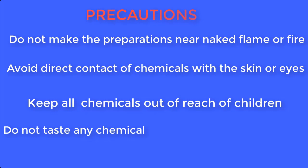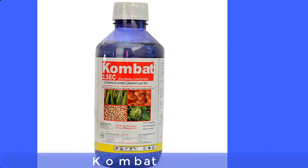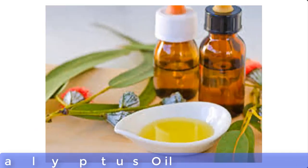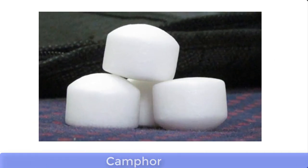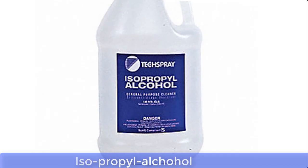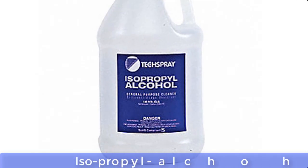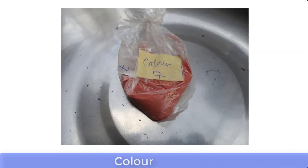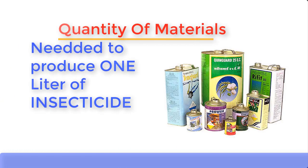Now let's go through the list of materials needed for this production. Number one is compact, number two is eucalyptus oil, number three is camphor, number four is kerosene, and number five is isopropyl alcohol also known as IPA. Number six is color. Please note that the solvent used for this preparation is kerosene.